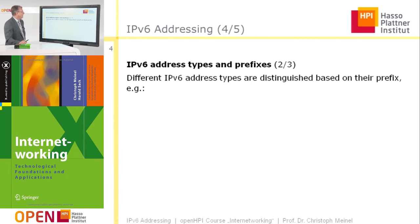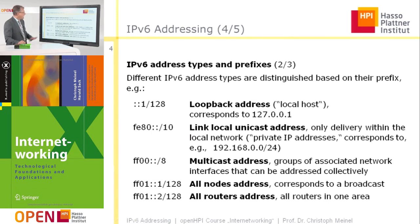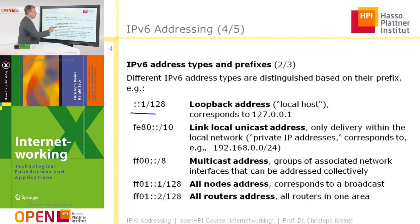There are more different IPv6 address types. We can recognize and distinguish the different types by their prefix. For example, one prefix characterizes the so-called loopback address — localhost — which corresponds in the traditional IPv4 world to the address 127.0.0.1.